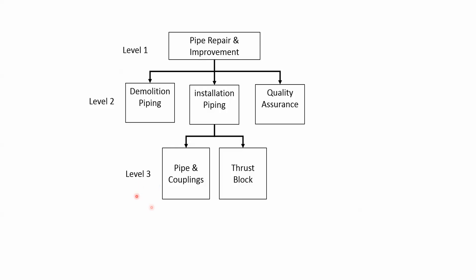What is common about all the WBS elements is that they are deliverable orientated. They are generally defined using nouns not verbs, and the WBS elements or work packages at the lowest levels — Demolition Piping, Pipe and Couplings, Thrust Block, and Quality Assurance — support the definition of the required tasks.